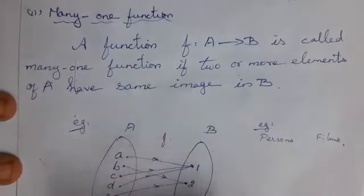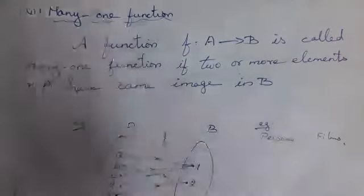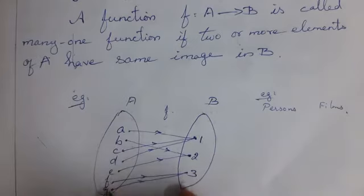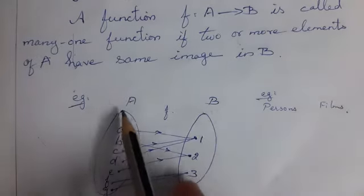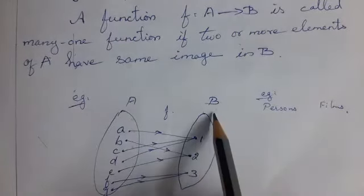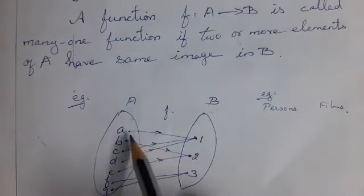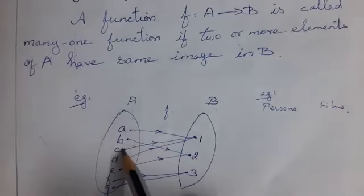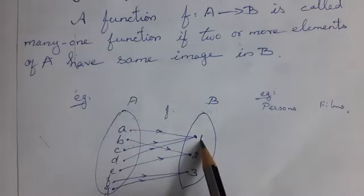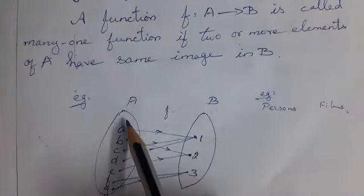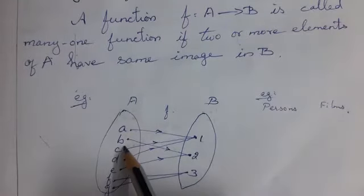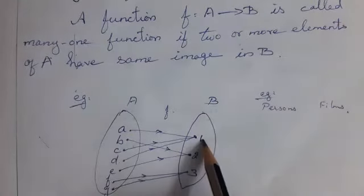See the example. Here you have elements a, b, c, d, e, f, g as elements of capital A. 1, 2, 3 are the elements of capital B. See the function: a, c, d have image 1. That is, two or more elements of A have the same image in B.